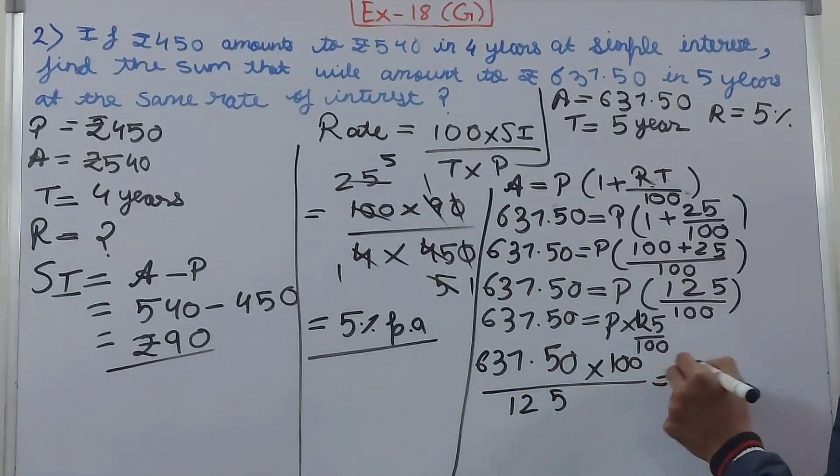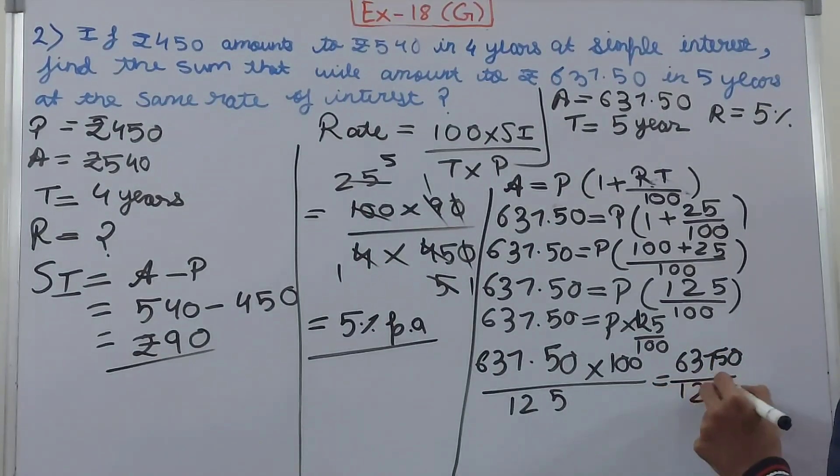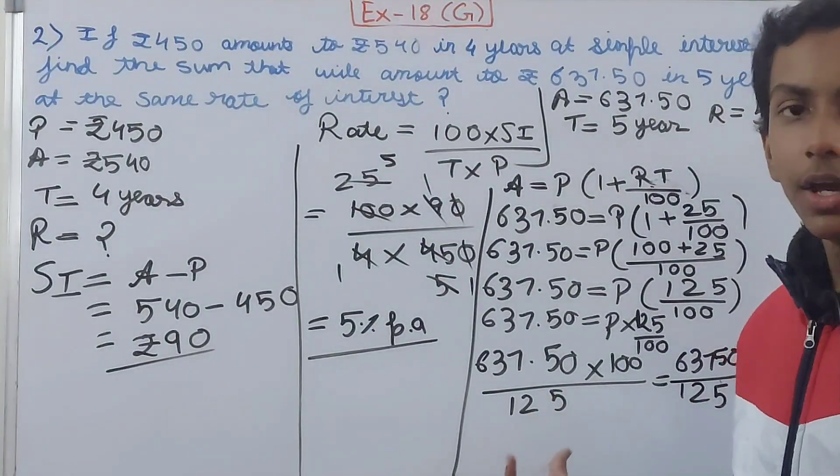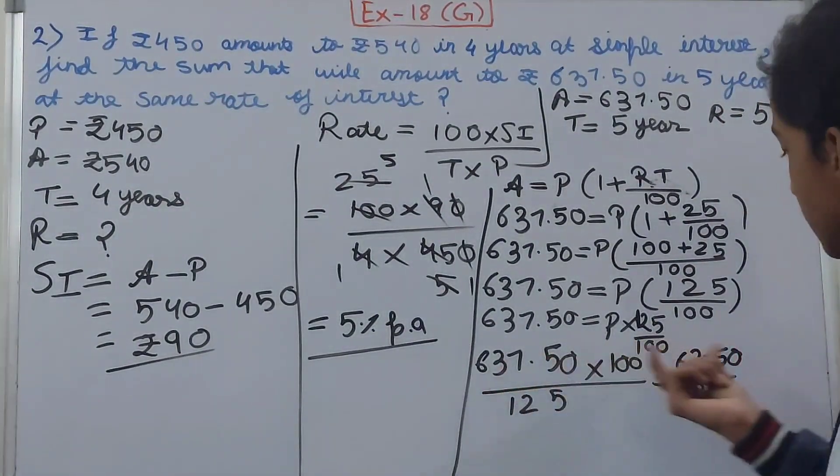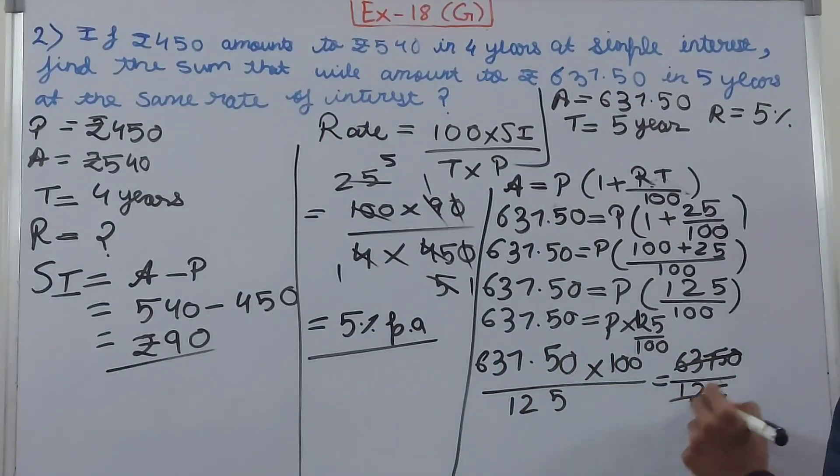This decimal point will shift two places here. So ₹637.50—sorry, there will be no point. I am removing the decimal point upon 125. Why have I not increased zeros in 125? Because this 100 is multiplied to give us 63,750. Now cancel this up to your convenience, however you like to cancel this thing.